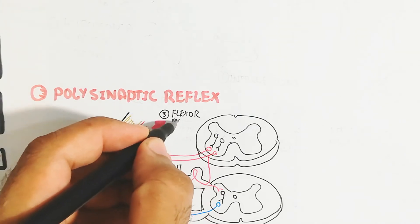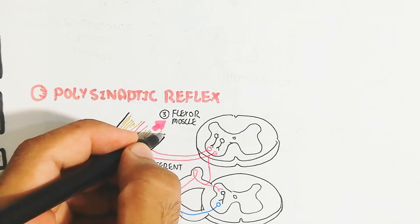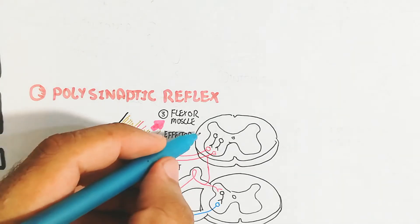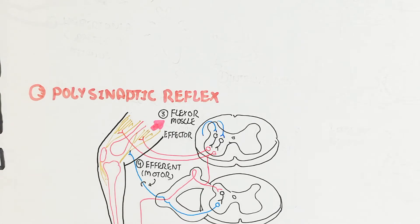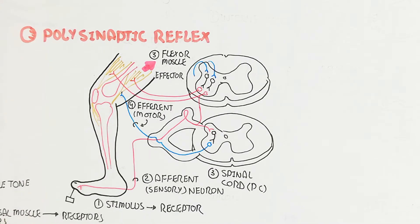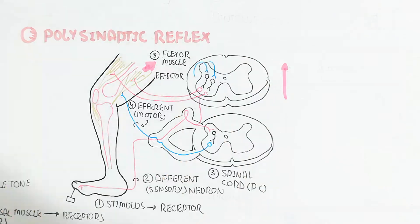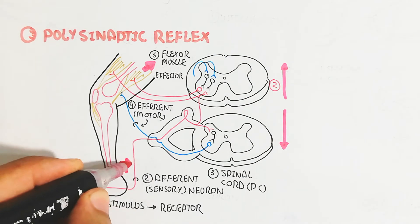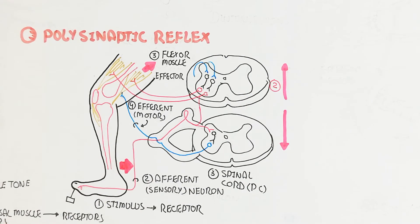The flexor muscle contracts while the quadriceps relaxes, causing the leg to move back. The spinal cord contains different regions for interconnection — this is why it is called the polysynaptic reflex: multiple synapses occur, producing the leg withdrawal movement.